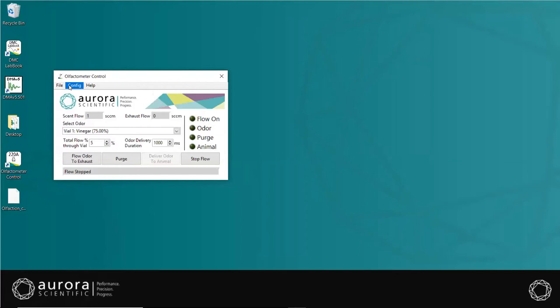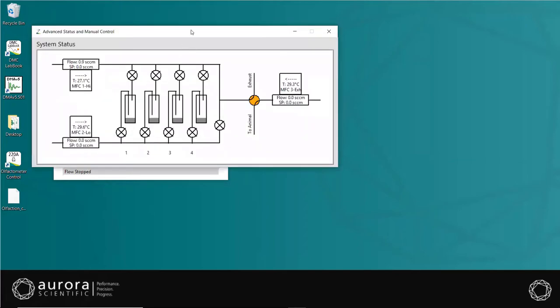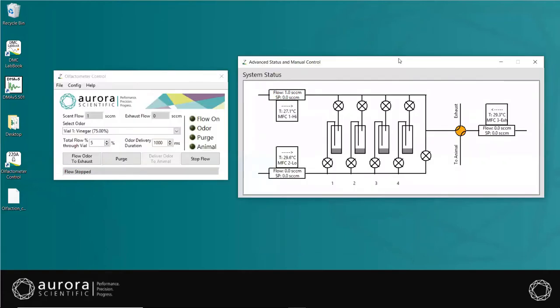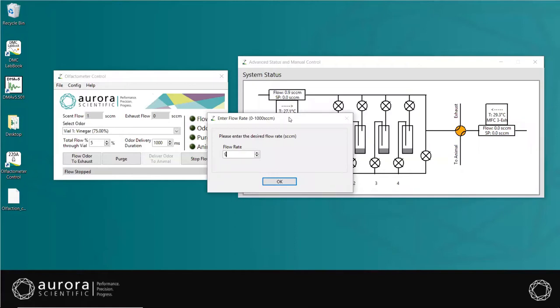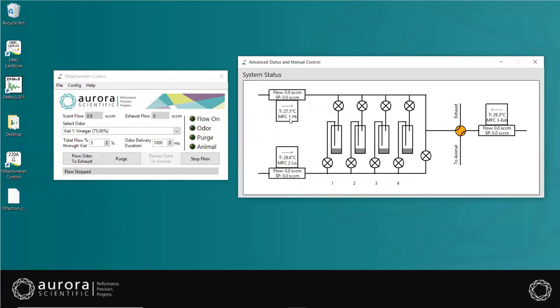Now let's take a look at the advanced status and control window. Click on config, advanced status and control. This window will display a graphical representation of the system status of the olfactometer in real time. Clicking on a mass flow controller will allow the user to set the flow rate manually. MFC1 is the dilution flow, MFC2 is the odor flow, and MFC3 on the right is the exhaust flow. The software will also auto detect the number of vials connected to it, and then update the diagram to show all vials in the system. Clicking on the various vials and valves on the diagram will actuate them manually. As vial valves are turned on and off, the diagram of the valve changes from an X for valve off, to a flow through line, valve on, and the background color of the valves changes from white to green.